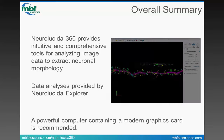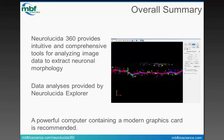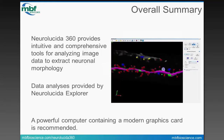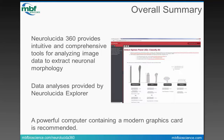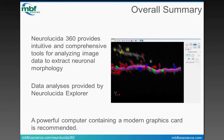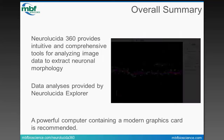So now we can provide a quick summary of what I've talked about today. Neuralucida 360 provides intuitive and comprehensive tools for analyzing image data to extract neuronal morphology. These data analyses are provided by Neuralucida Explorer. As a reminder, a powerful computer containing a modern graphics card is recommended.